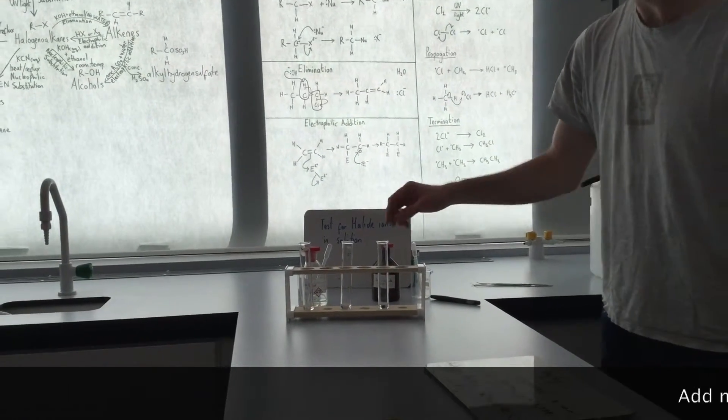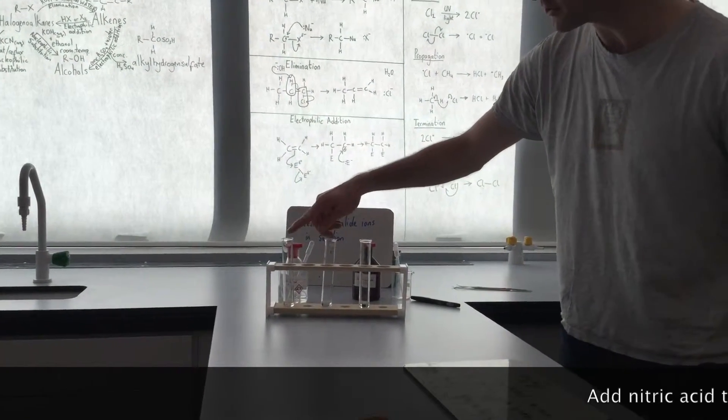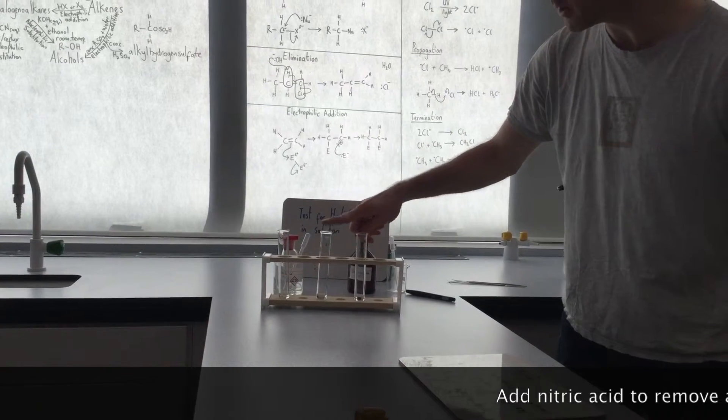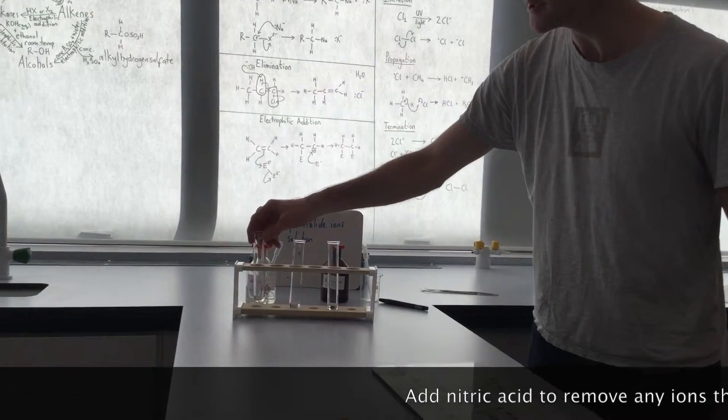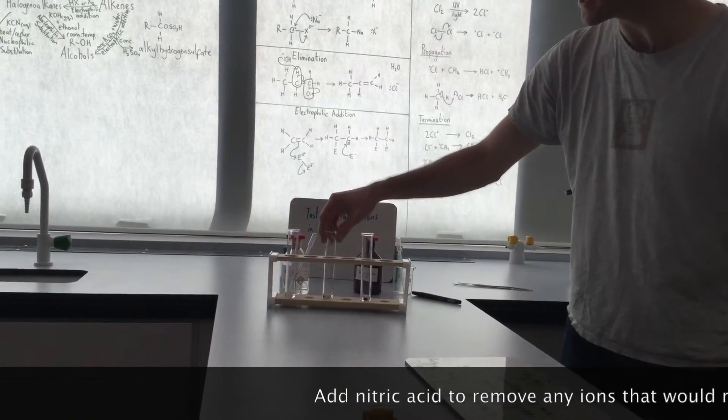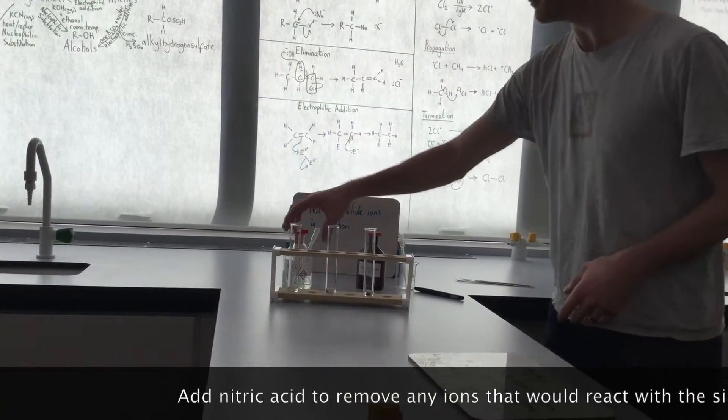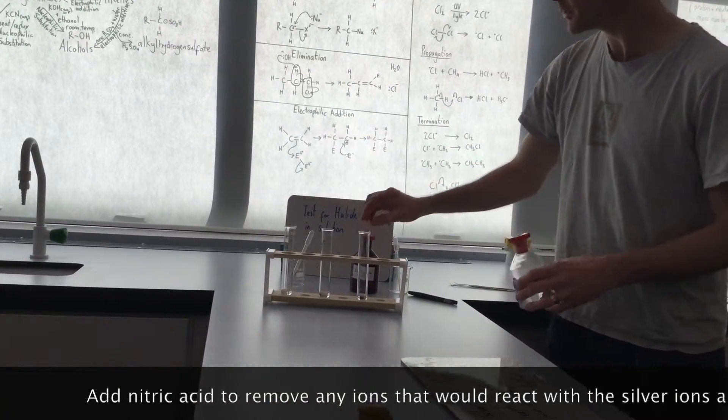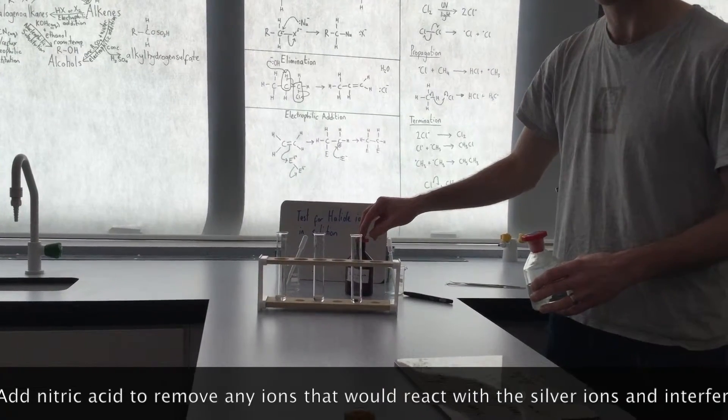Okay, so we're going to test for the halide ions in solutions. So I've got three test tubes of chloride, bromide, iodide. You can see that they all form colorless, clear solutions. So to tell the difference between them, you need to add some silver nitrate solution which will form a precipitate.